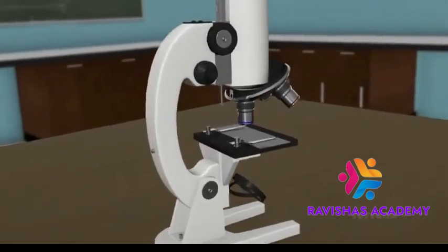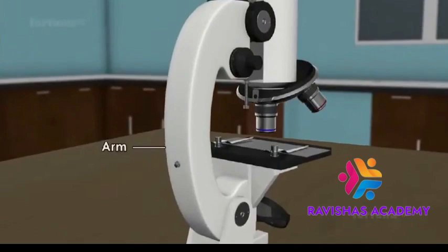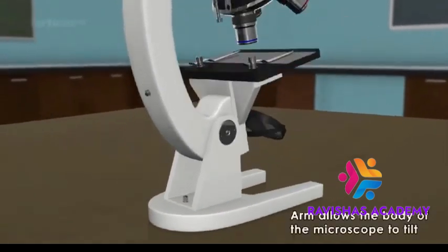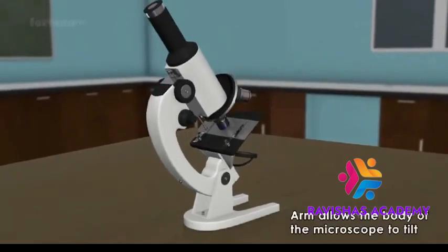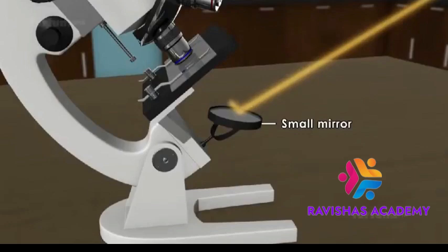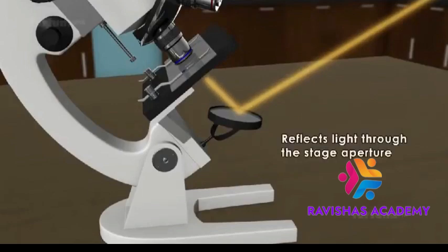The body tube is arranged on an arm which is connected to a strong base. This arm allows the body of the microscope to tilt. A small mirror at the base of the microscope reflects the light through the stage aperture.